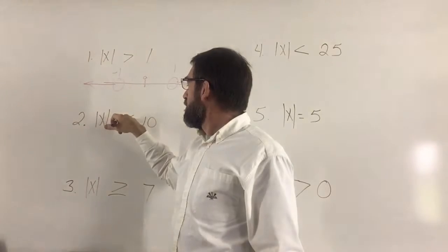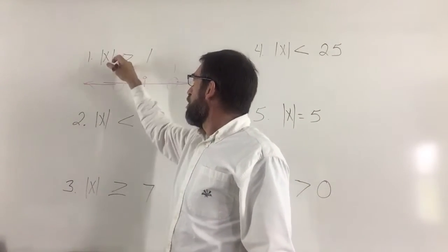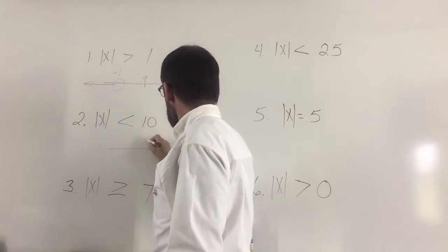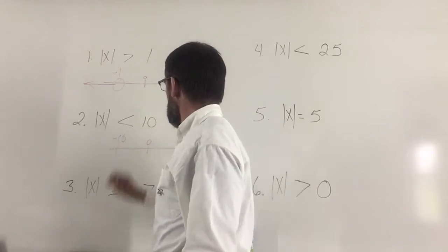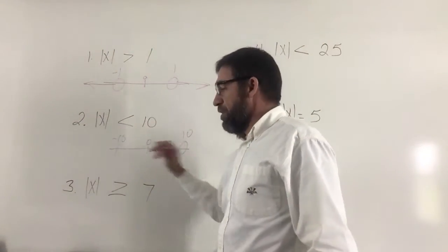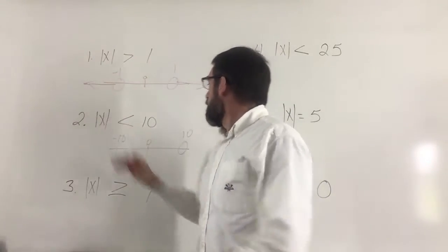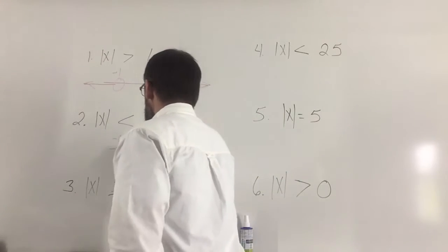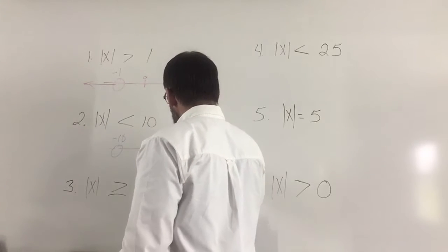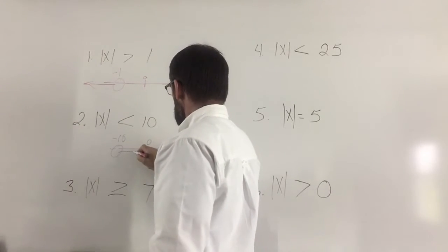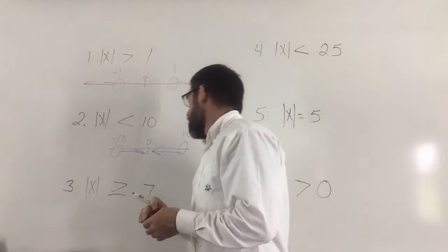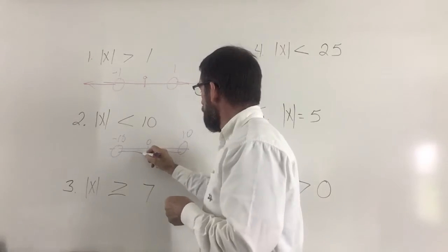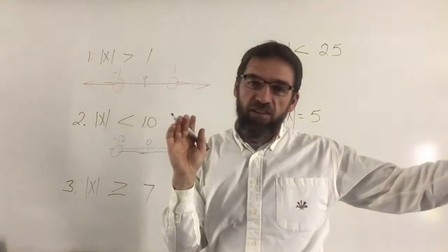Now looking at number two, we have almost the same example except the inequality is going toward the ten, versus before where it was going out away. I'll draw the number line again with positive ten and negative ten, and zero in the middle. Because the arrow went outward before, this one is bringing them in. There's no line underneath so our circles are open. The arrow goes like this — toward each other, connecting from side to side. No separate arrows because it's not indefinite — it's from positive ten to negative ten.